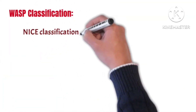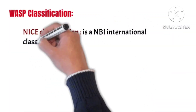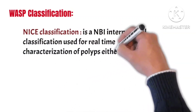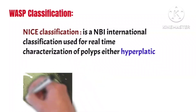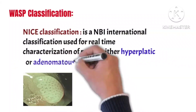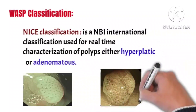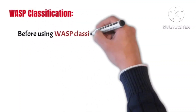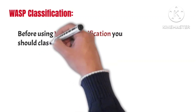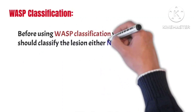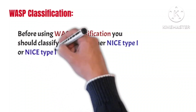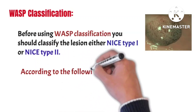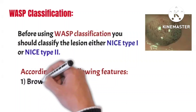NICE classification is a narrow-band imaging international classification used for real-time characterization of polyps, either hyperplastic or adenomatous. Before using WASP classification, you should classify the lesion as either NICE type 1 or NICE type 2, according to features such as brown color of the lesion more than the mucosal background and brown vessels in the lesion.